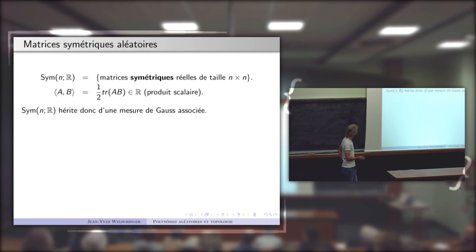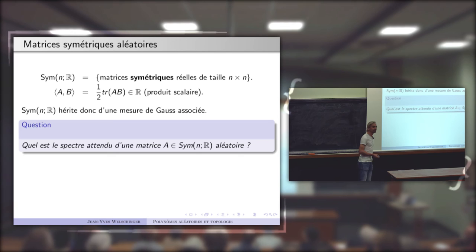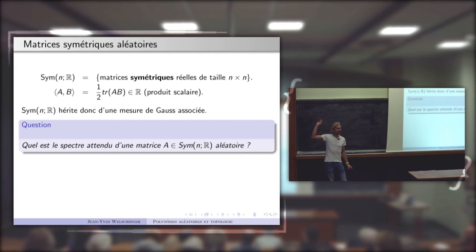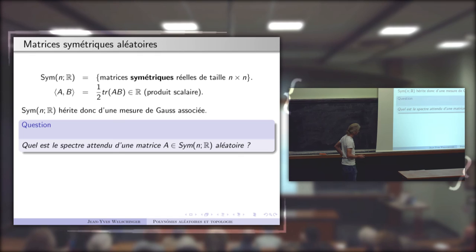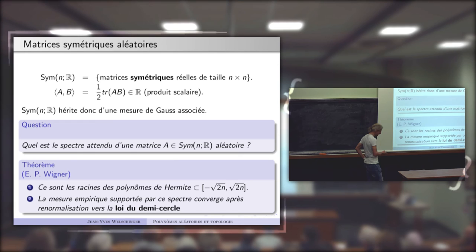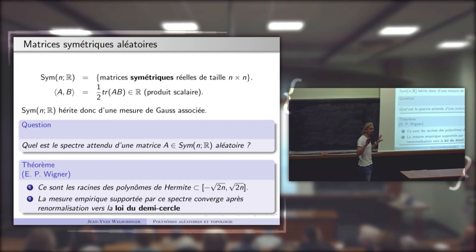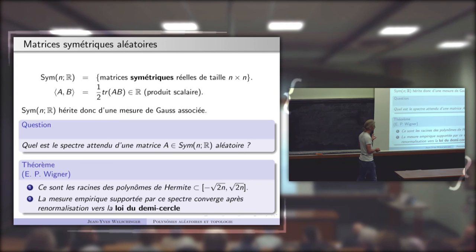La question classique que se posent les probabilistes : quel est le spectre attendu d'une matrice symétrique aléatoire ? Vous piochez au hasard une matrice symétrique réelle, elle diagonalise sur R et a n valeurs propres réelles. L'espérance mathématique du spectre, la position attendue des valeurs propres, ce sont simplement les racines du polynôme de Hermite de degré n. Suite de Gauss-Hermite : les racines donnent la position du spectre.